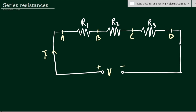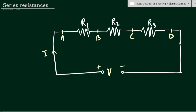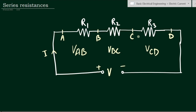Suppose the current is capital I — the total current flowing through the loop. If we consider the voltage drop across resistance R1, we name it Vab, because A and B are the two points across it. Similarly, for R2 the voltage drop is Vbc, and for R3 it is Vcd.